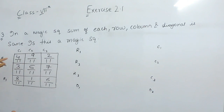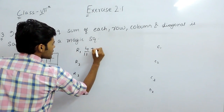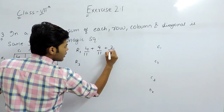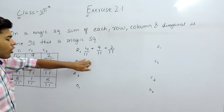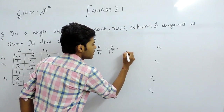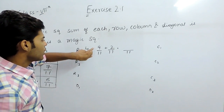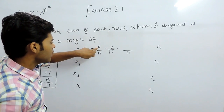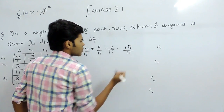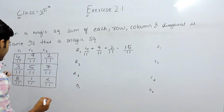So first of all the first row: 4 upon 11 plus 9 upon 11 plus 2 upon 11. The denominator is the same, so LCM will be 11 only. Now we will add the numerators: 4 plus 9 is 13 and 13 plus 2 is 15. So the first row sum is 15 upon 11.